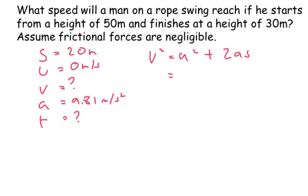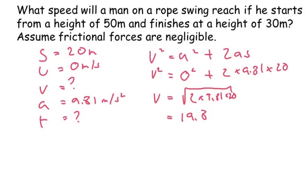Now, u is 0, so u squared is also 0. And we've got 2 times 9.81 times by 20. That's going to equal v squared. And then we end up with v is going to equal the square root of 2 times 9.81 times 20. And that gives us an answer of 19.8 metres per second. Exactly the same as the previous answer with a different method.